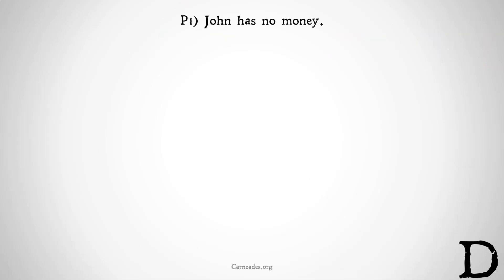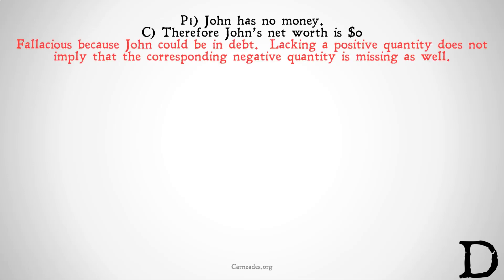Let's take a look at some examples. Premise: Johnny has no money, therefore John's worth is zero dollars. This is fallacious because John could be in debt — simply because he has no money doesn't mean that he doesn't also have a negative amount of money. Lacking a positive quantity does not imply the corresponding negative quantity is missing as well.